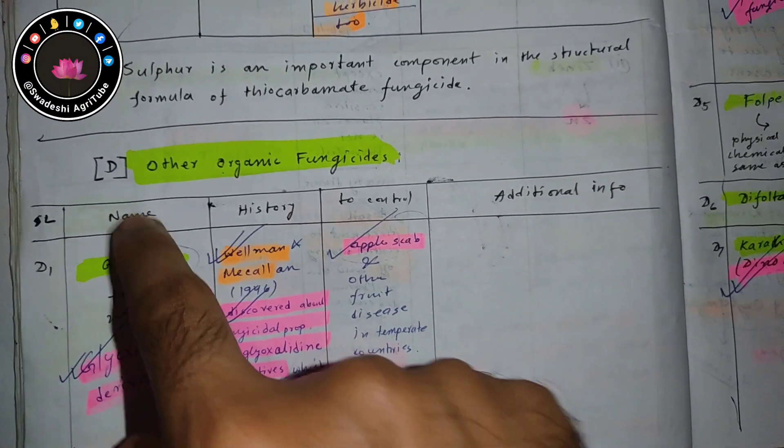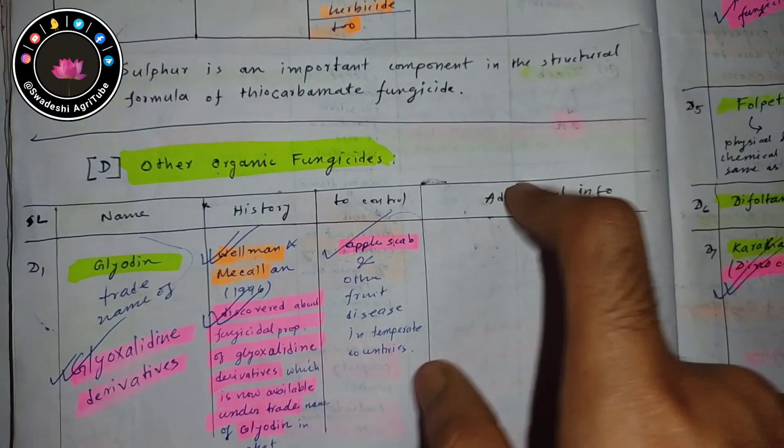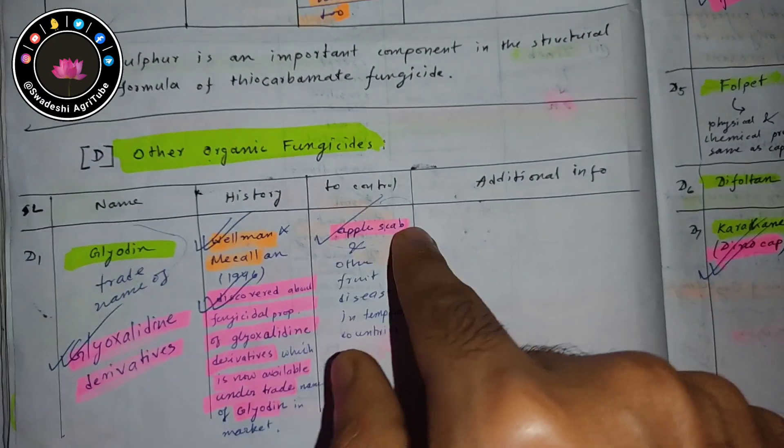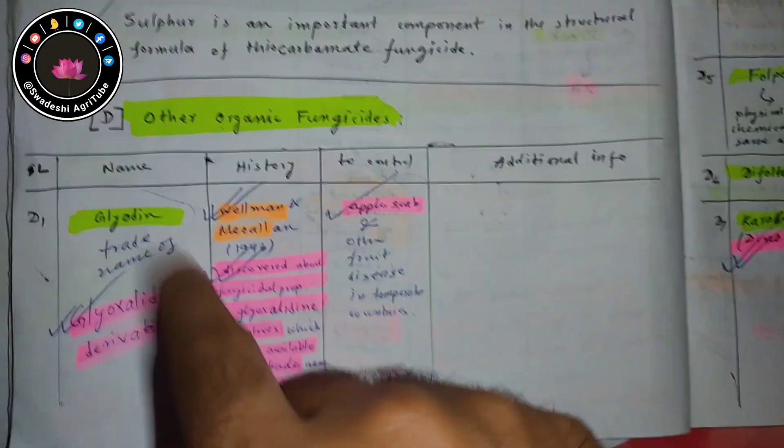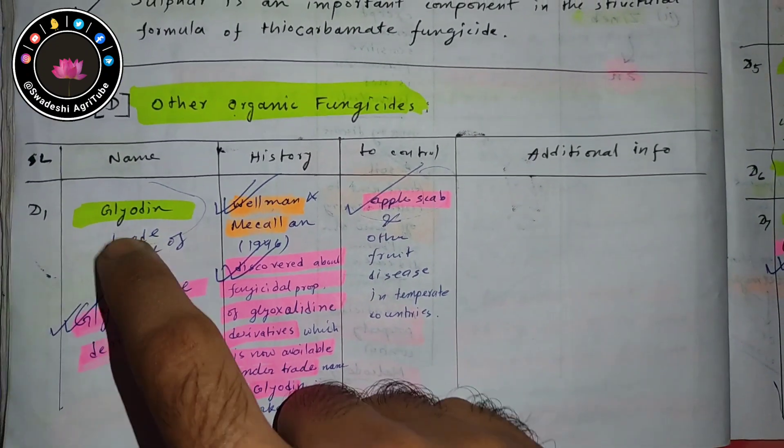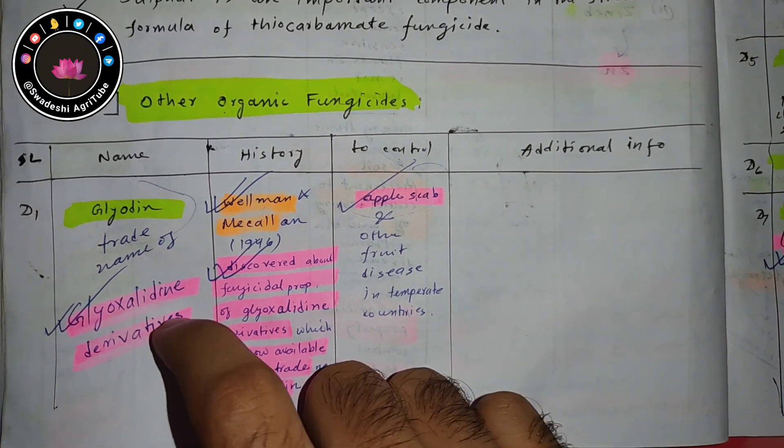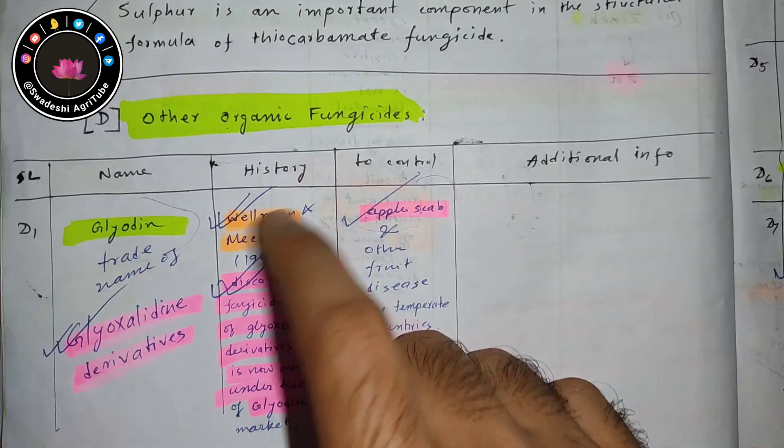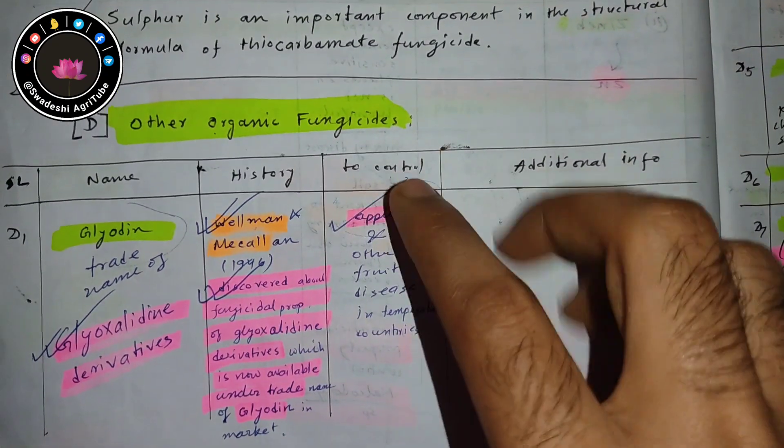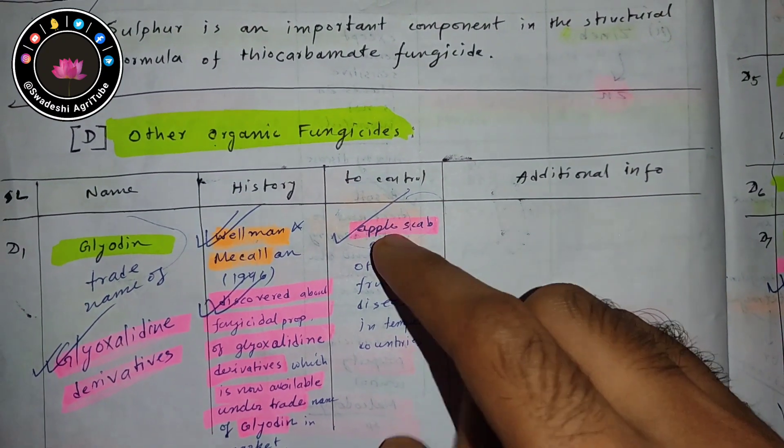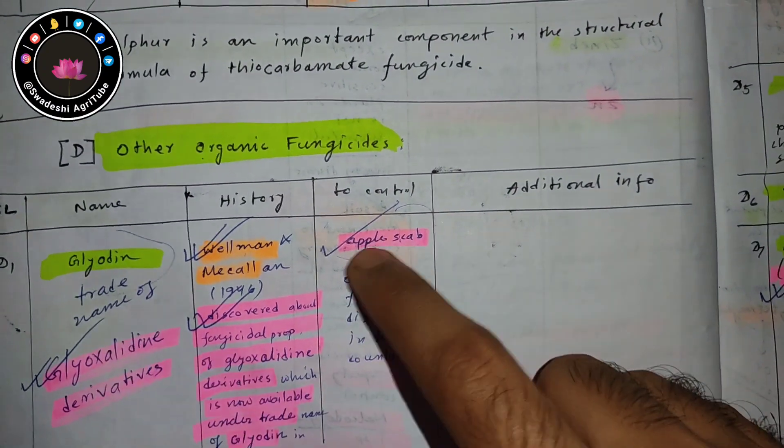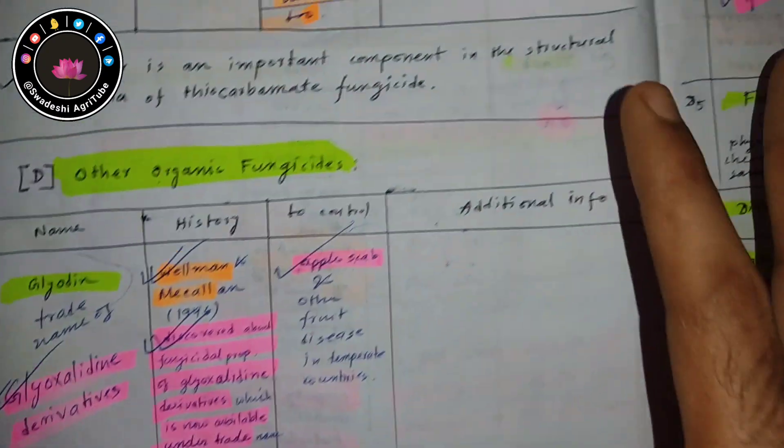Make this kind of chart: name, history, control, and additional info, and highlight those important points only. The first one is glyodin. Glyodin is the trade name of glyoxylidine derivatives. It was discovered by Wellman and McCallan. What can we control with this glyodin? Apple scab only—this you have to remember.